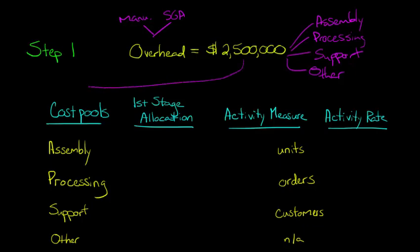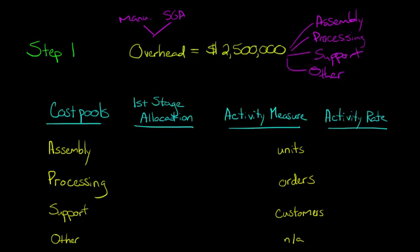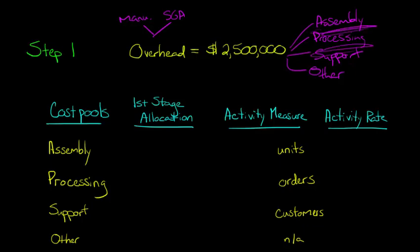Now we're going to take that $2.5 million and spread it across those four pools. This is known as the first stage allocation — there will be two stages total, and we'll cover the second stage in the next video. To determine how much goes into each pool, we interview our employees and ask what percent of the overhead is driven by assembling units, processing orders, and so forth. We come up with percentages and use them to calculate the first stage allocation amounts.